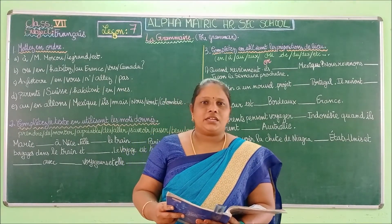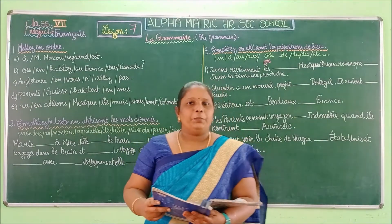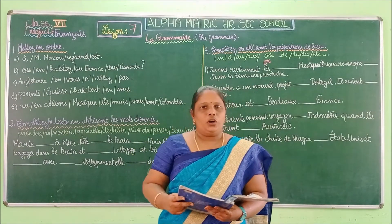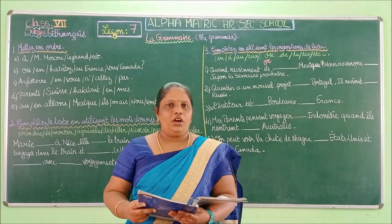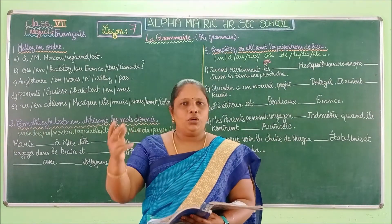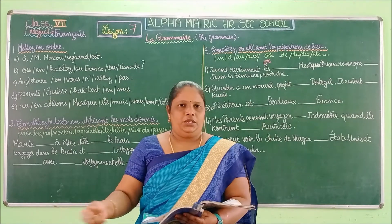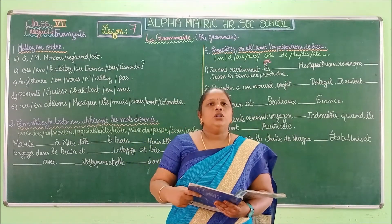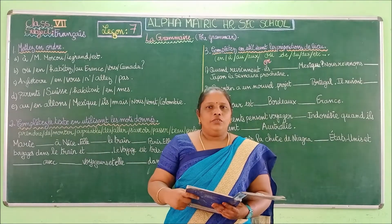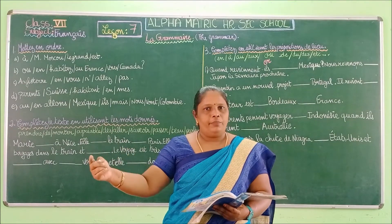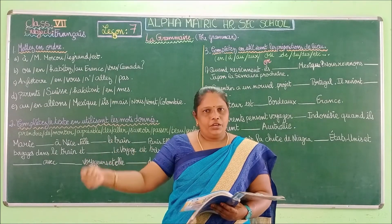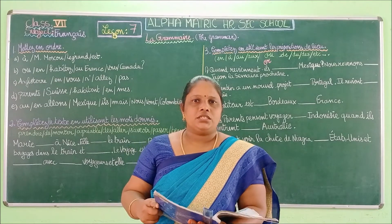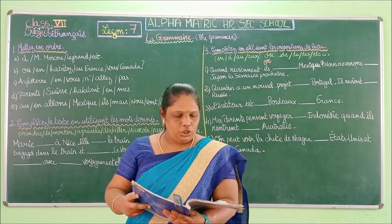So, what did we see in the last class? We saw the prepositions — à and de. À means 'to' or 'at', and it indicates belonging, going to, or living in a place. We also saw 'de', which means 'from' — we are going from a place or belonging from a place. We saw two exercise lessons: exercise number 1 and 2.